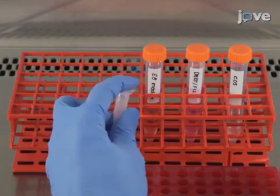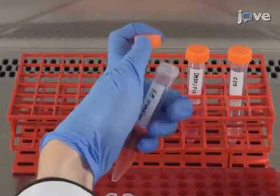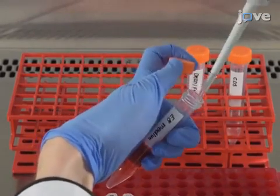Next, add doxycycline to E8 medium to make a final concentration of 4 micrograms per milliliter, and then add rock inhibitor to the mixture.